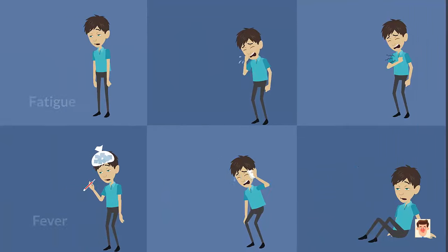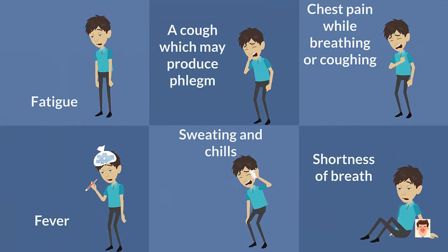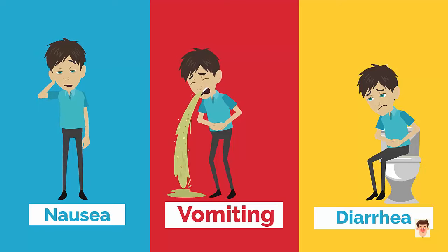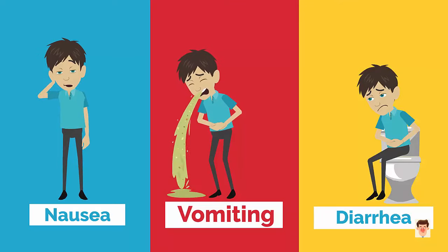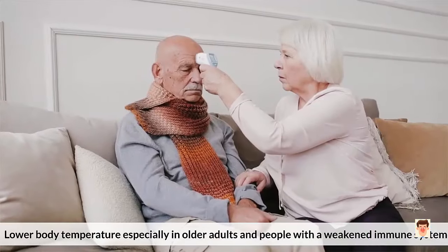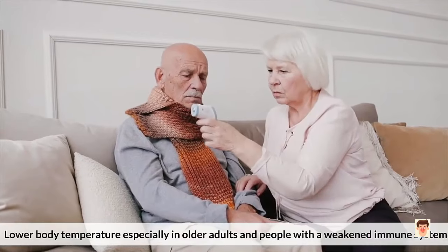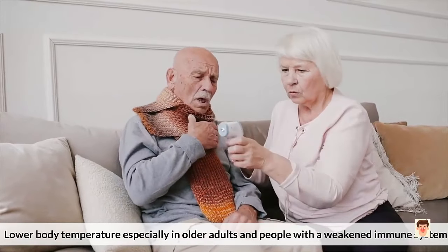Symptoms of pneumonia include fatigue, a cough which may produce phlegm, chest pain while breathing or coughing, fever, sweating and chills, shortness of breath, nausea, vomiting, diarrhea, and lower body temperature — especially in older adults and people with a weakened immune system.